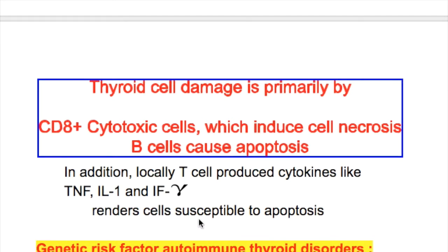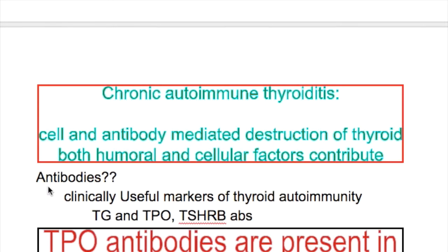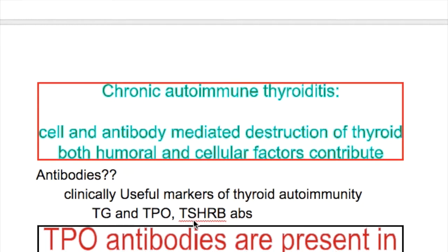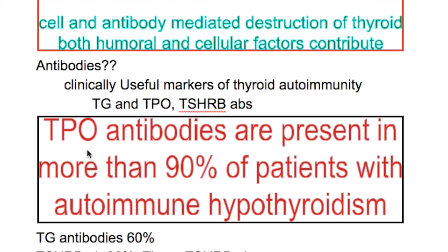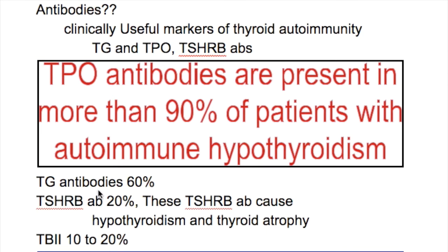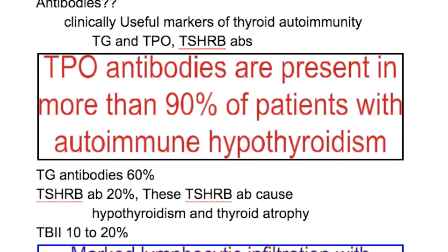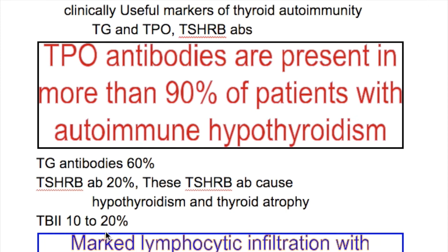The clinically useful antibody markers of thyroid immunity are thyroid peroxidase antibody, thyroglobulin antibody, and TSH receptor blocking antibodies. Thyroid peroxidase antibodies are present in more than 90 percent of patients with autoimmune hypothyroidism. Thyroglobulin antibodies are present in 60 percent, and TSH receptor antibodies in 20 percent of patients. TSH receptor blocking antibodies cause hypothyroidism and thyroid atrophy, and are present in 10 to 20 percent of cases.